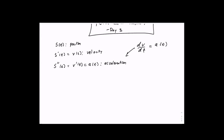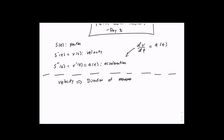Velocity tells us the direction of movement. If v(t) is greater than zero, we are moving forward. If v(t) is less than zero, we are moving backwards. And if v(t) equals zero, we are at rest.